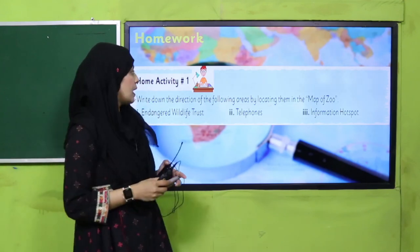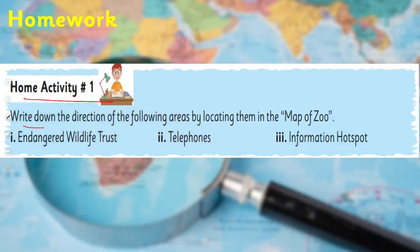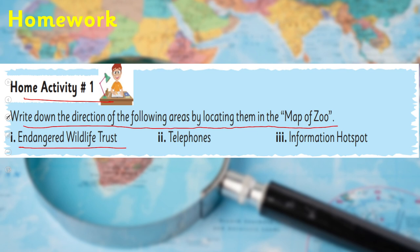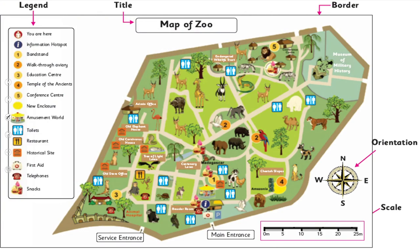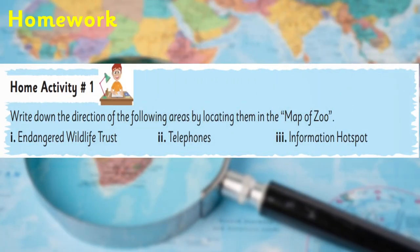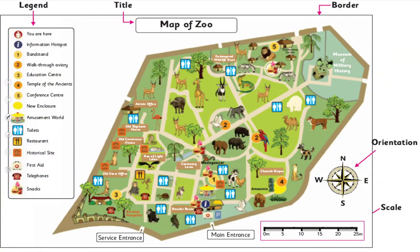Now let's move forward to the homework. For homework, you will do home activity number one. Write down the directions of the following areas by locating them on the map of Zoo Endangered Wildlife Trust. You need to tell the direction of these areas.